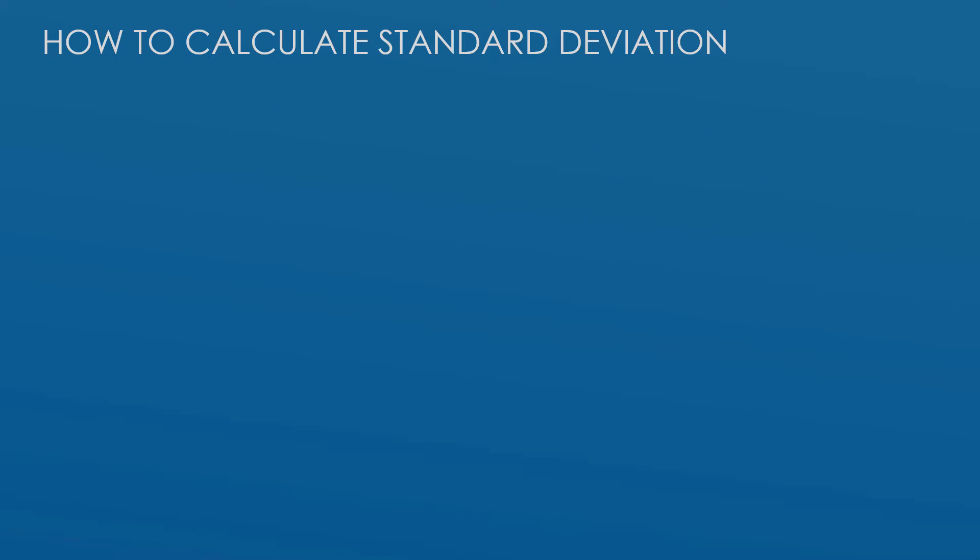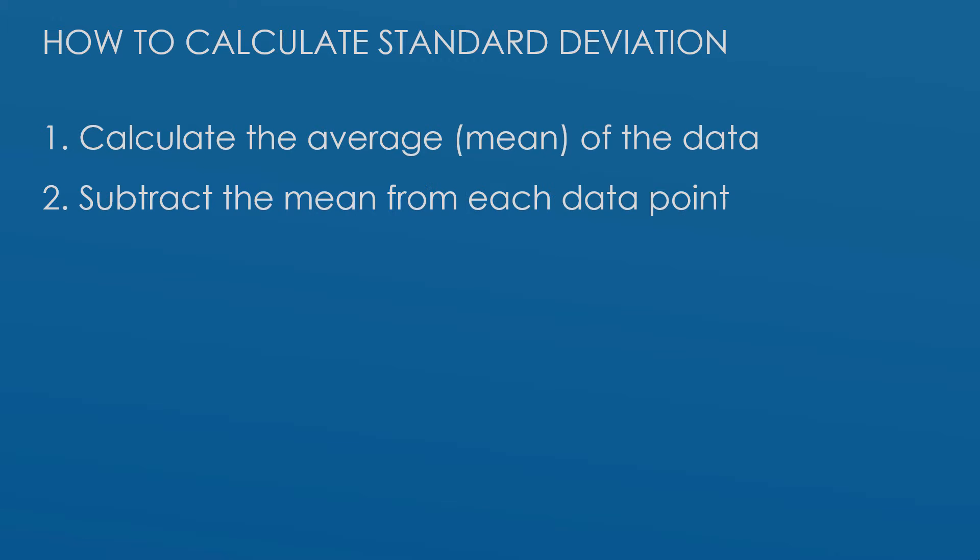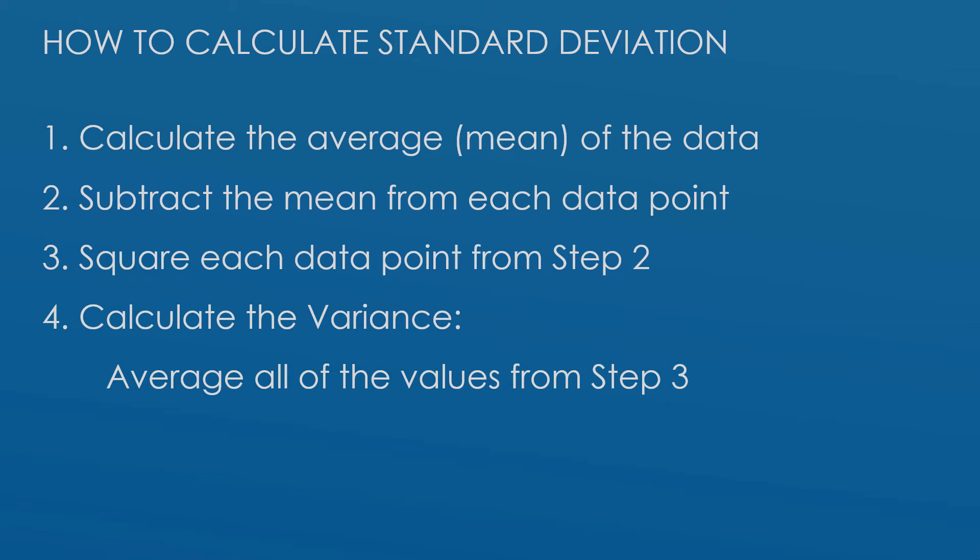To calculate standard deviation, first you're going to calculate the mean or the average of the entire data set. Next, subtract the mean from every data point within the data set, and then square that result. We square it to eliminate any negative values.